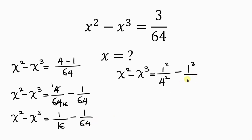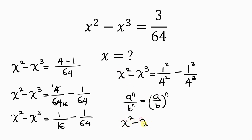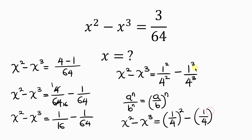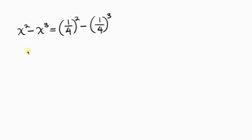And 64 is a perfect cube which means it can be written as 4 cubed. From indices, whenever we have a to the n all over b to the n, this is the same as (a over b) all raised to the n. So this expression becomes (1 over 4) all raised to the 2, minus (1 over 4) all raised to the 3.